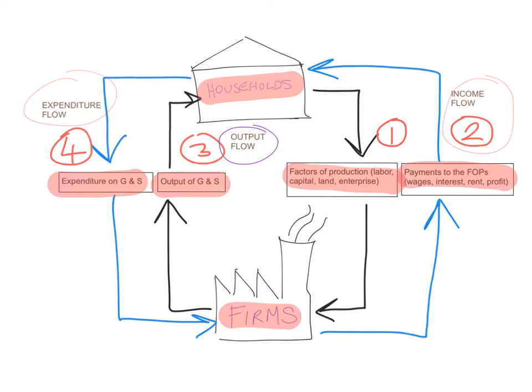There are four arrows to pay attention to. The first is the flow of the factors of production. In return, there are the factor payments, which is the income flow. When the firms take the factors of production, they produce output — that's the output flow. When consumers receive the output, they spend money on it, which gives us the expenditure flow: expenditure on goods and services.